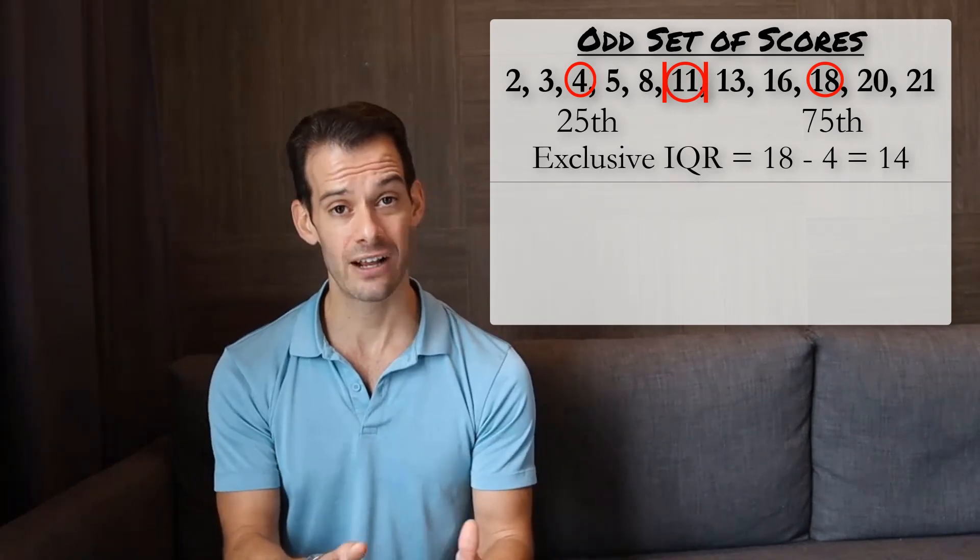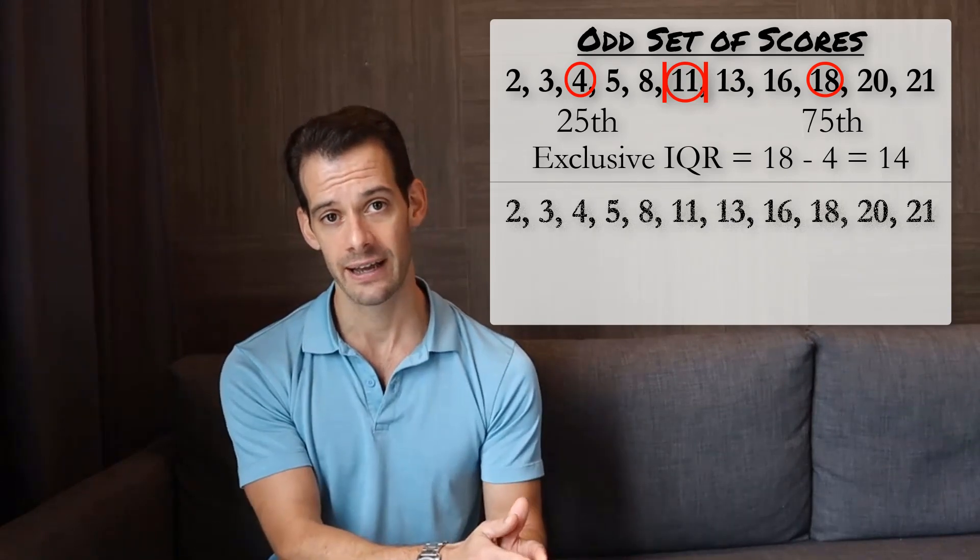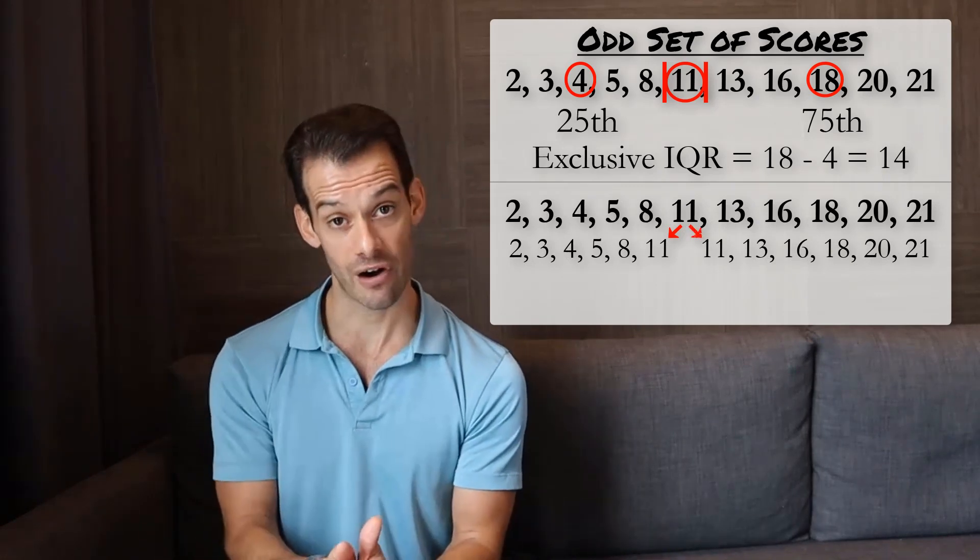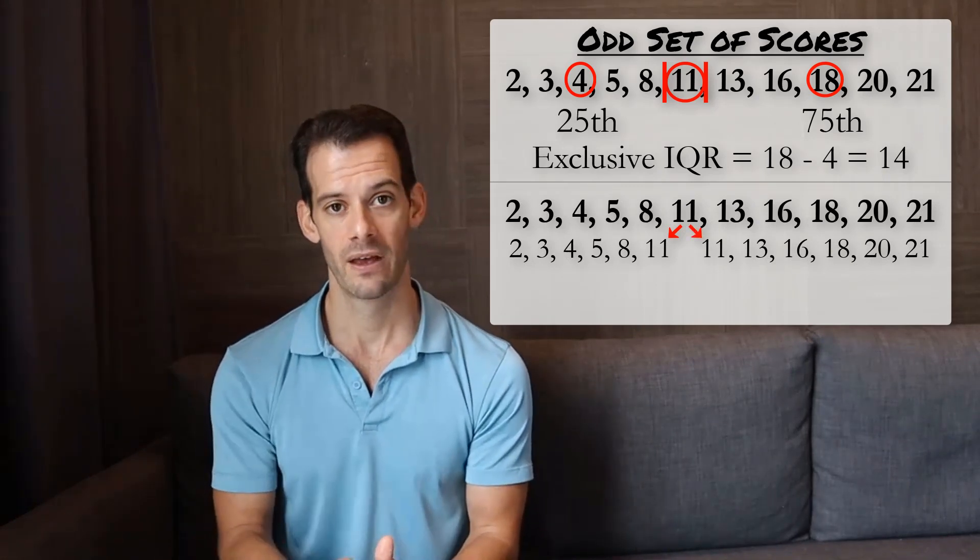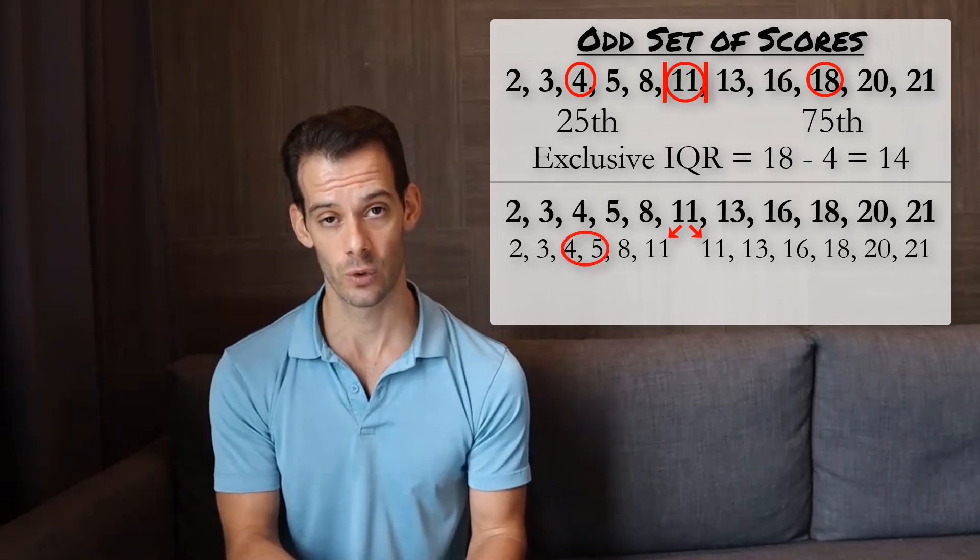But we could decide to do an inclusive interquartile range here. This means we'd say that the lower half of our data extends up to and including 11, and the upper half of our data starts at 11 and moves up. This means that the 25th percentile would be the mean of 4 and 5, which would be 4.5.